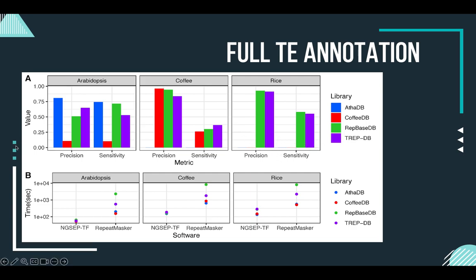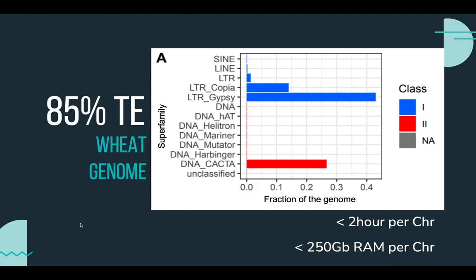In all cases we also got a reduction of 3 to 20 times in the time required to annotate the genomes. Finally, we wanted to know what would happen with a complex genome such as the hexaploid wheat genome.